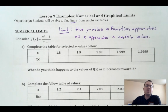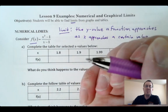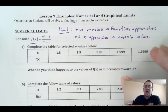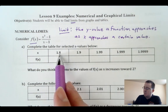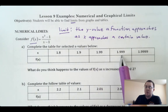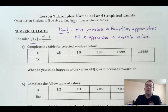We're going to start with numerical limits, which is all about tables and plugging in values to our function. We've got a function here: f of x equals x cubed minus one over x minus one. And we're going to plug in some values. I have x values of 1.8, 1.9, 1.99, 1.999, and 1.9999 — getting really, really close to the value of 2, but not actually plugging in 2.